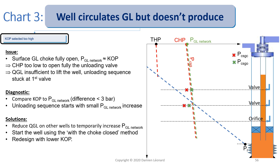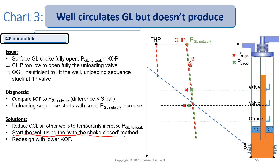What are the solutions for this issue? You could reduce the gas lift rates on all other wells connected to the same source of high pressure gas in order to temporarily increase the gas lift network pressure. If you can temporarily increase the gas lift network pressure, you should be able to temporarily increase the casing head pressure in that well so that the first valve opens fully. You could also start the well with the choke closed method, which I will detail later in this training.